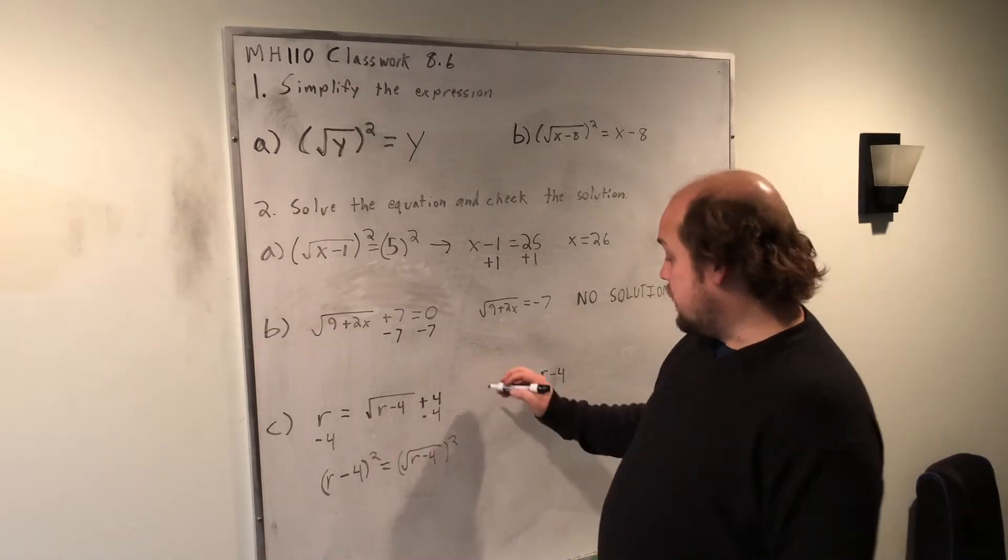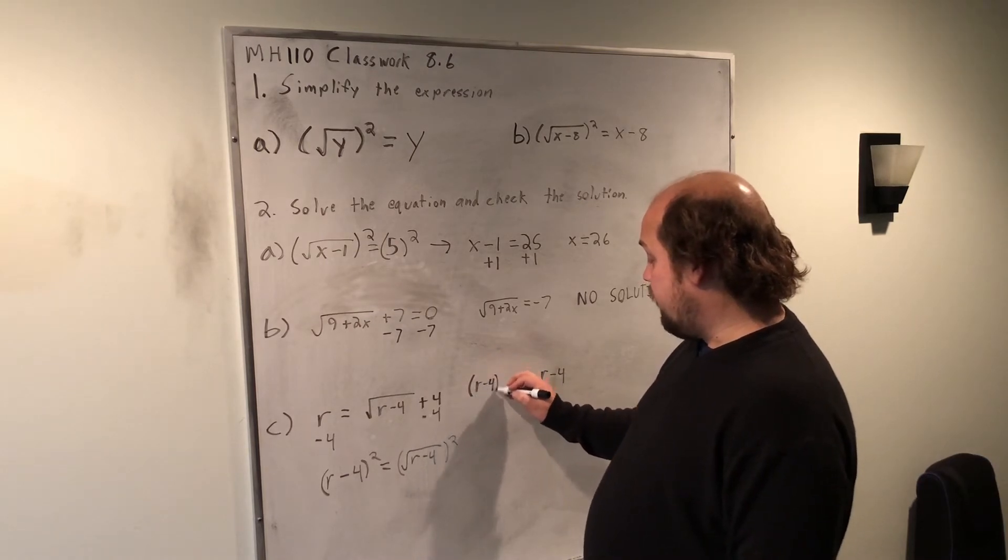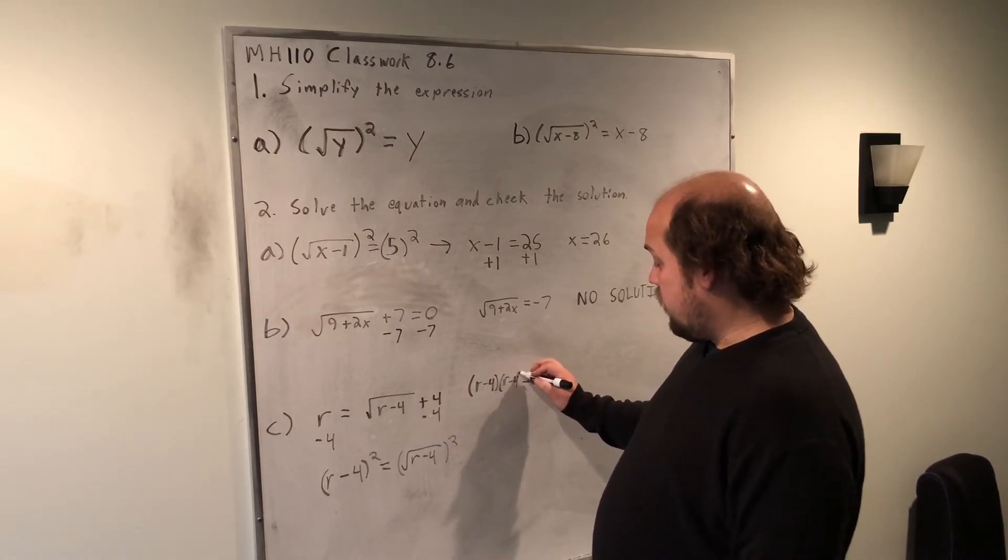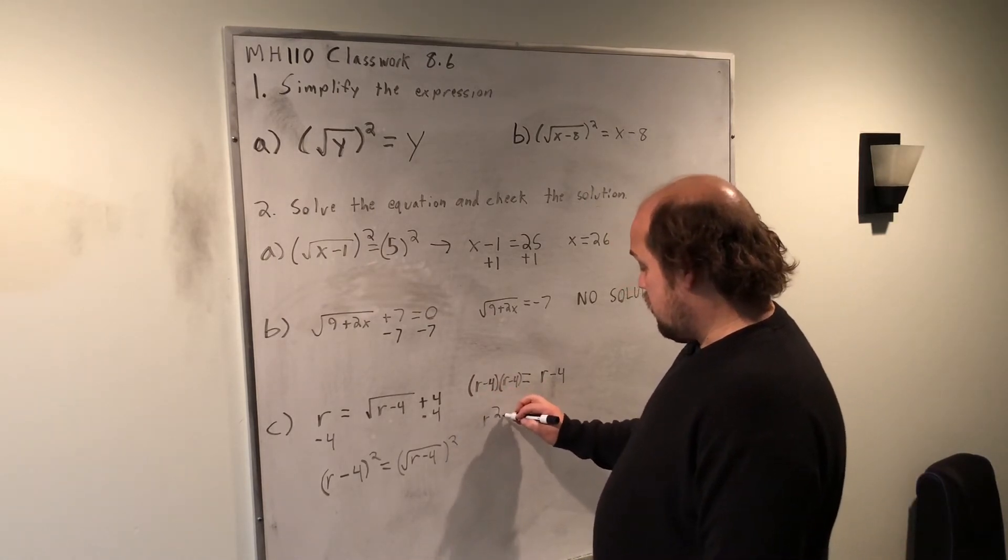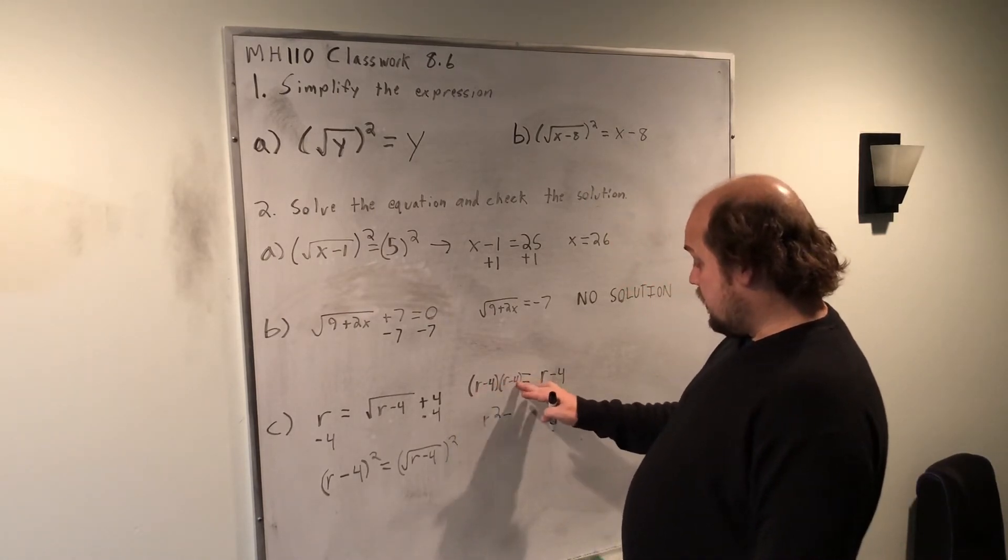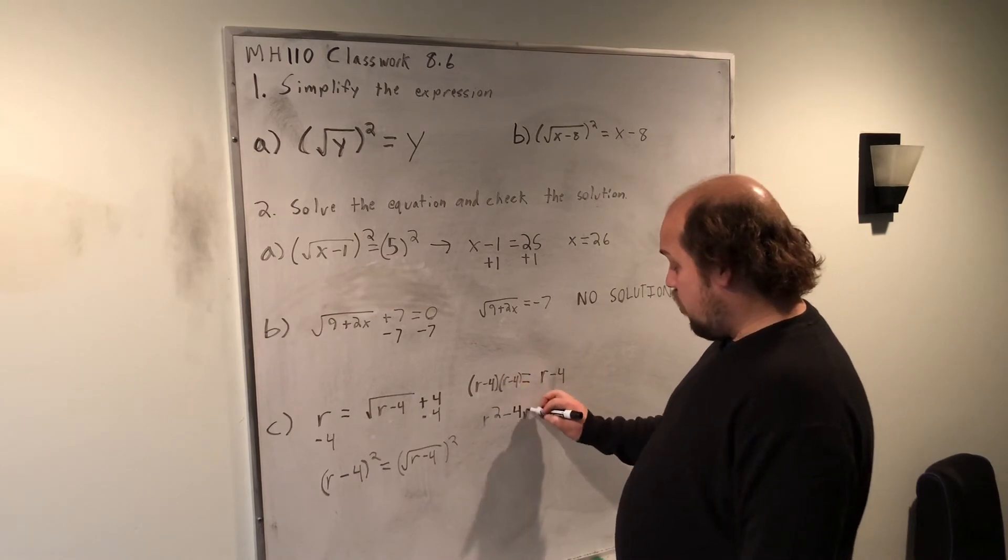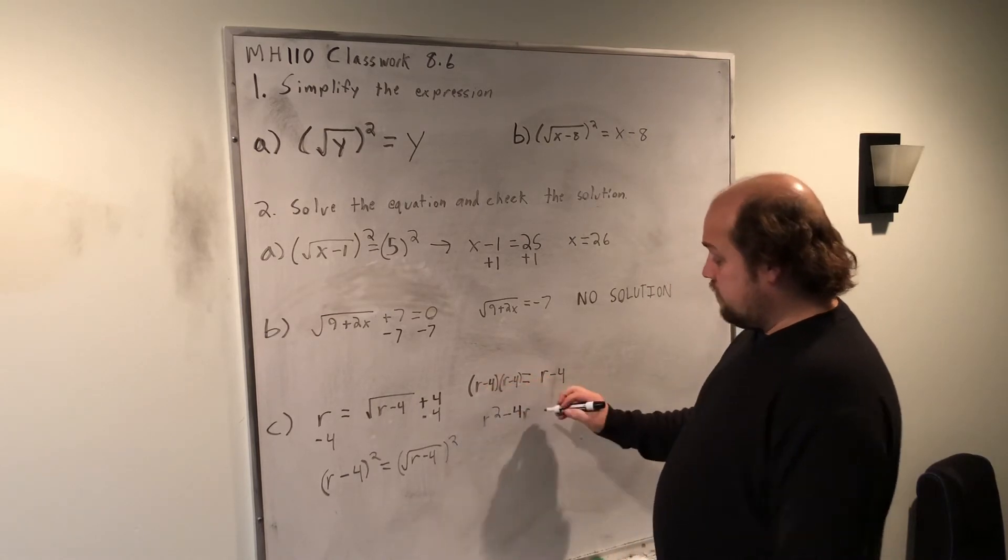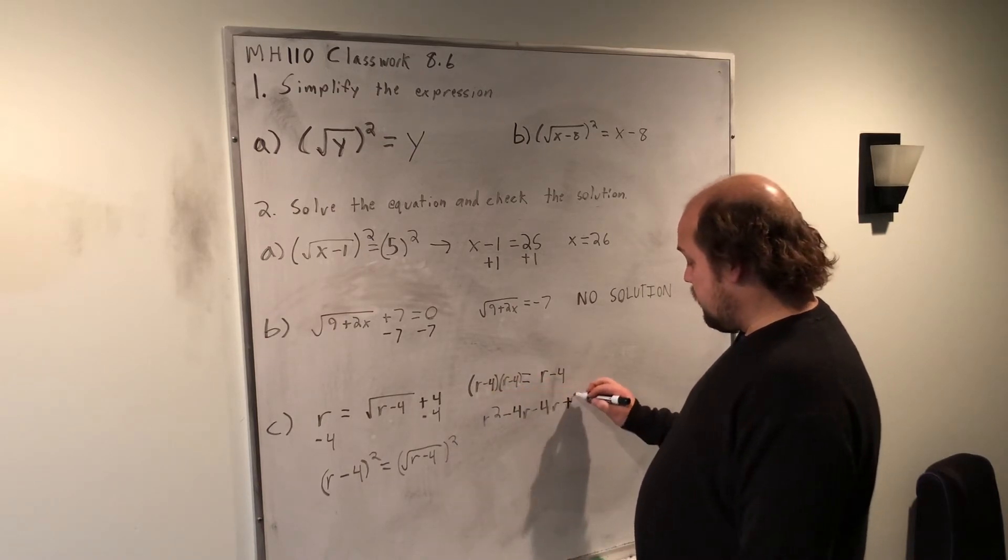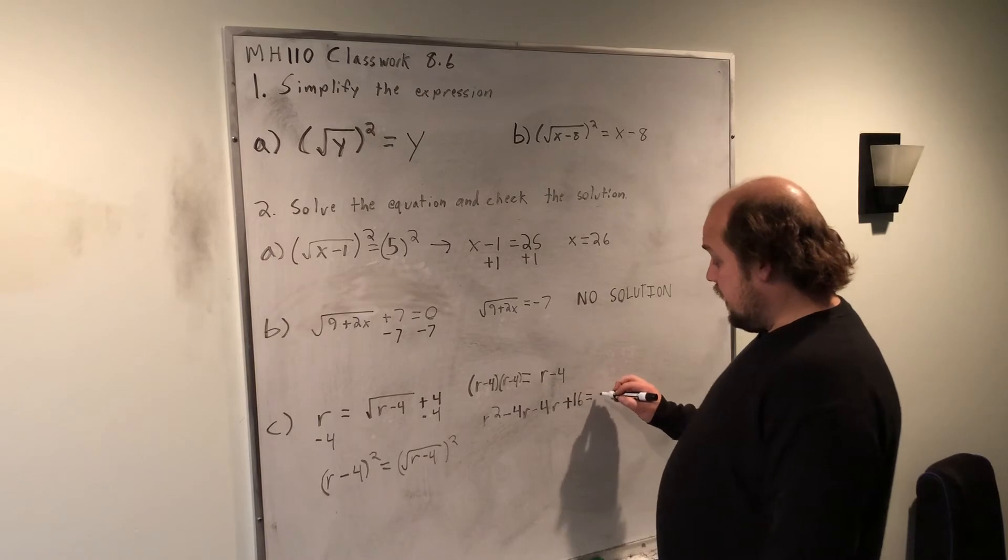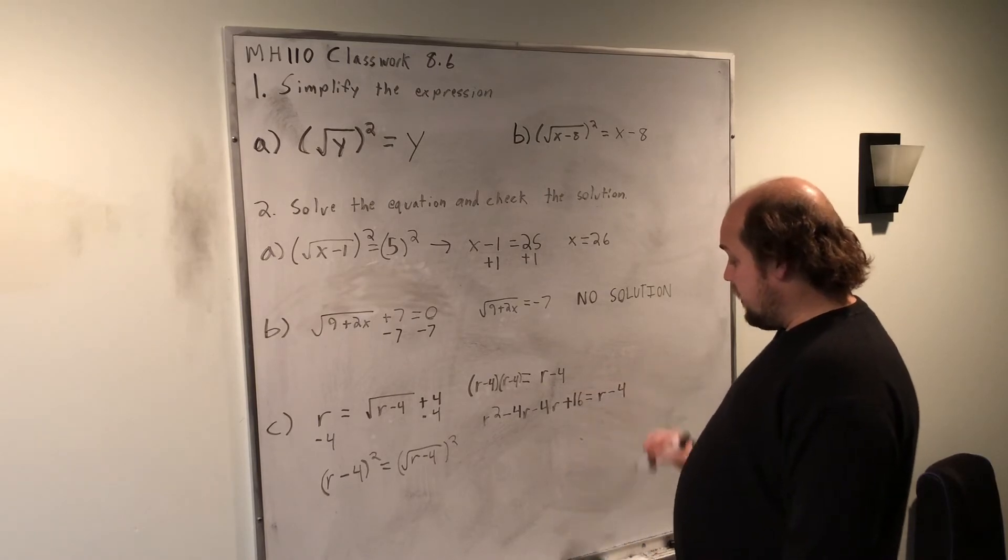When I square this side, I need to remember that it really means r minus 4 times itself. r times r gives me r squared. Minus 4 times r gives me minus 4r. Minus 4 times r gives me another minus 4r. And then minus 4 times minus 4 gives me a positive 16. It's still all equal to r minus 4.